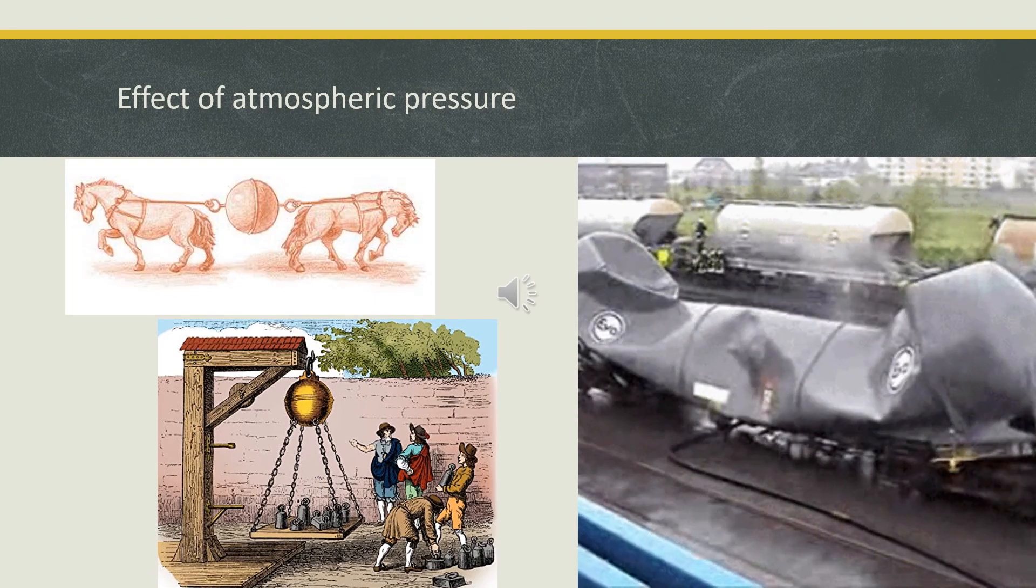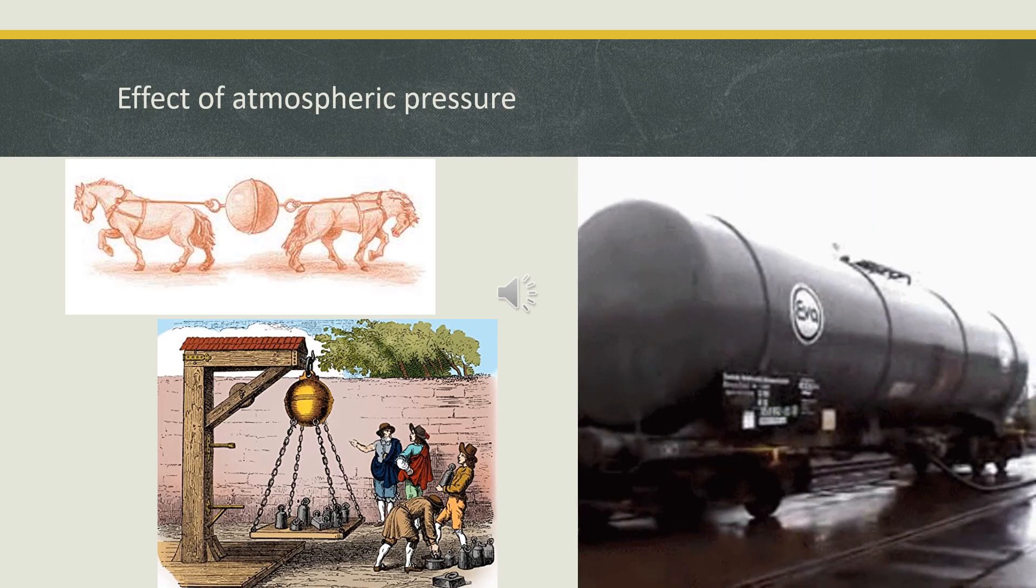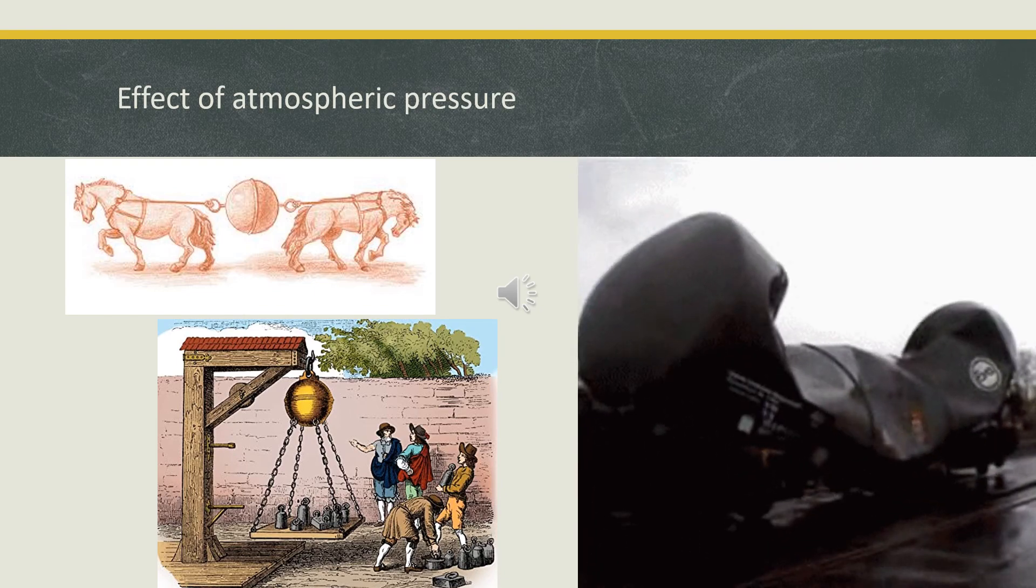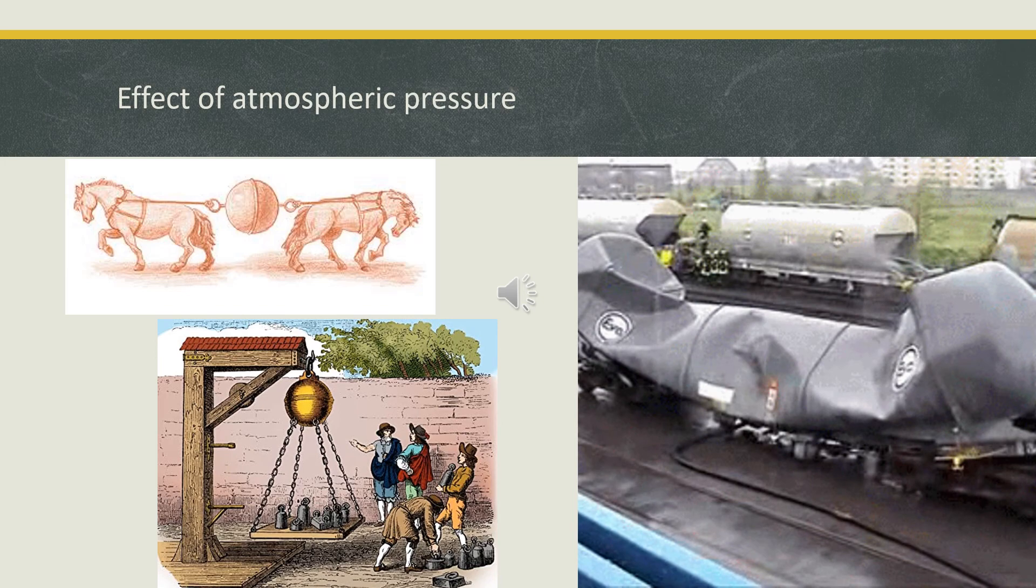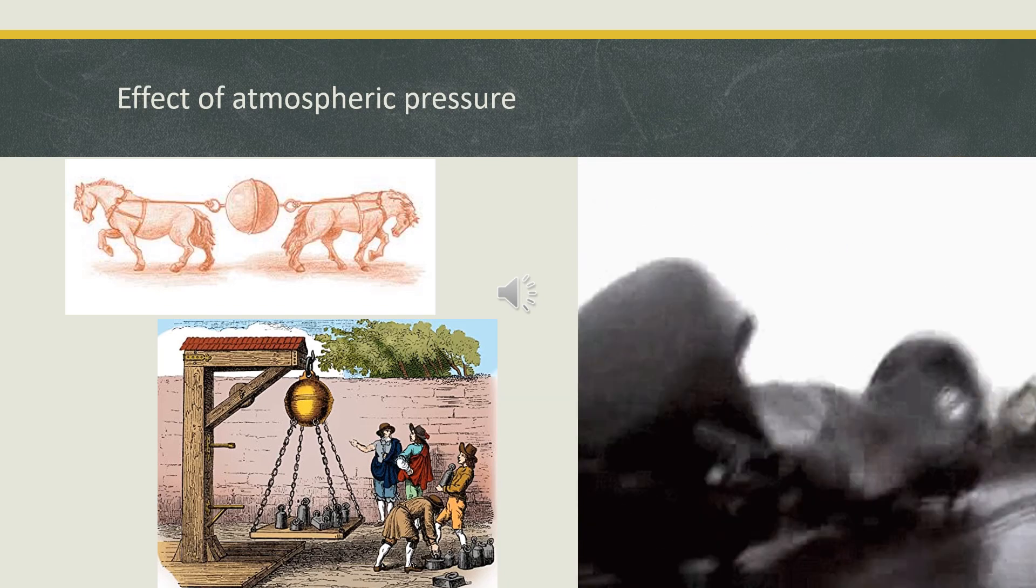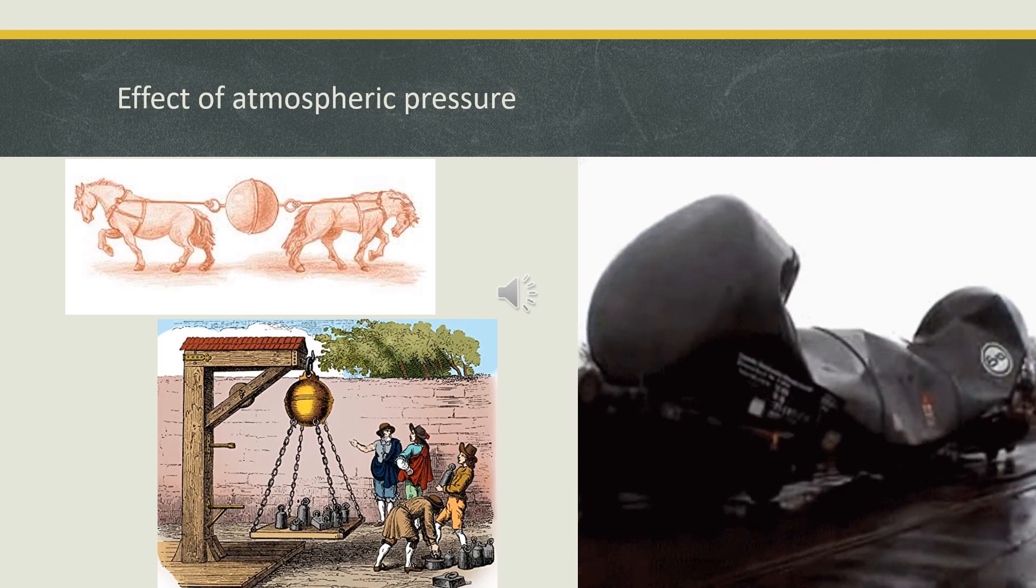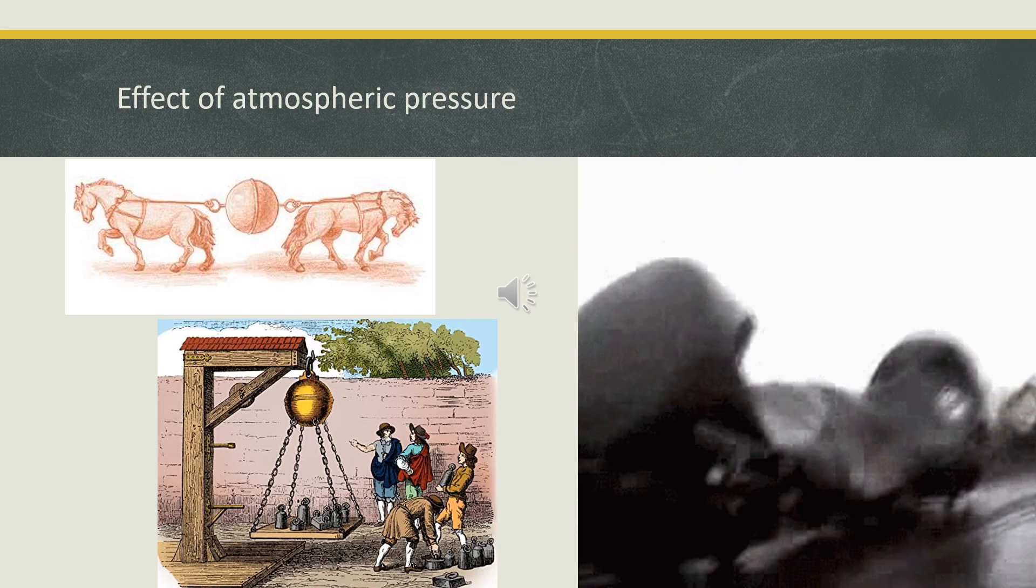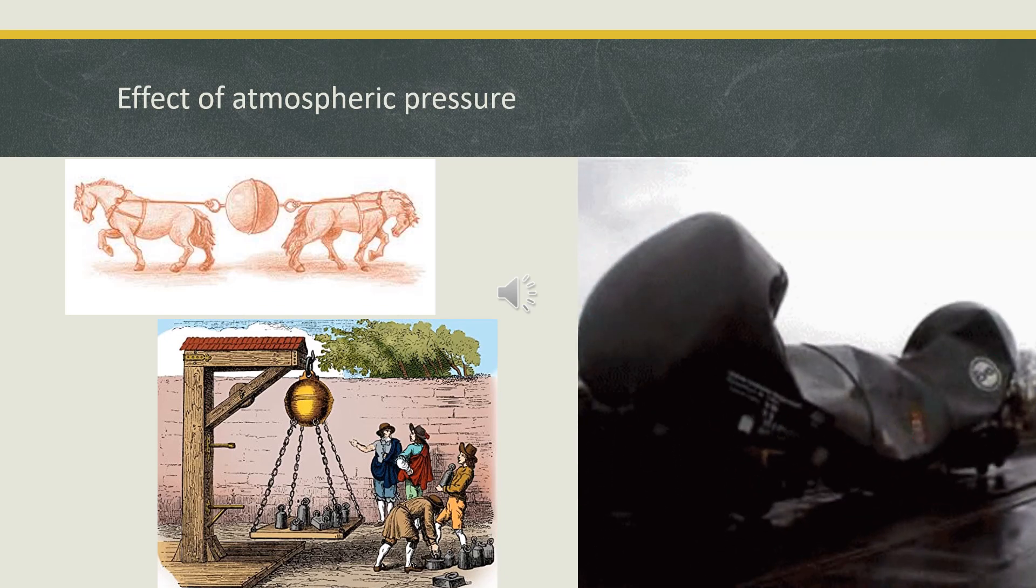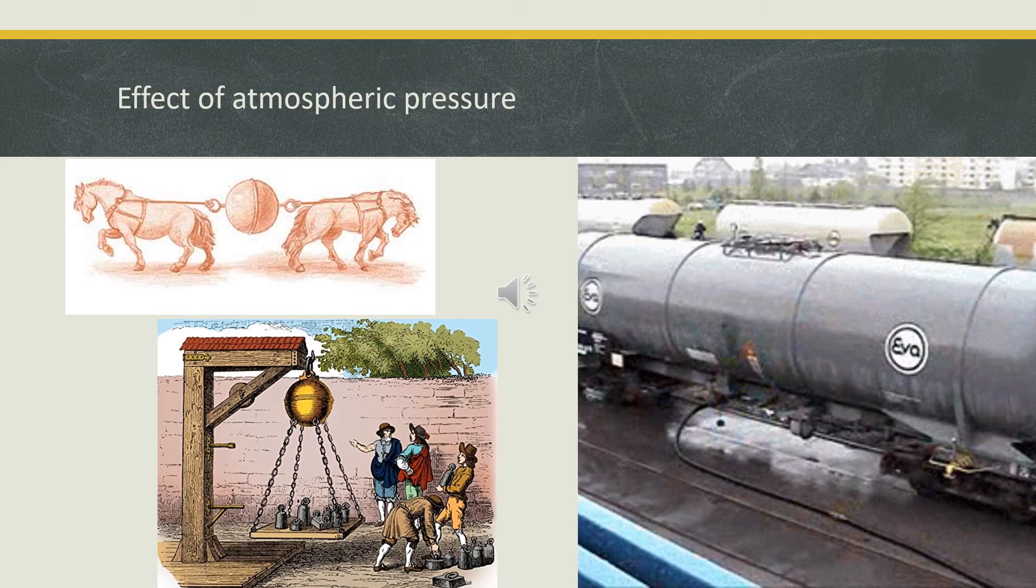The force or the pressure exerted by the atmosphere is very huge. This was demonstrated by a German physicist and engineer by the name Otto von Guericke. He took two semi-circular copper balls and fitted them together to form a sphere. Then he sucked all the air from the sphere using a suction pump to create a vacuum inside the sphere. The two balls were now held together only due to the atmospheric pressure. Then he tried to separate the two balls by getting them pulled apart by a team of eight horses on each side. The balls remained held tightly together due to the atmospheric pressure and did not separate. This proved the enormous force of atmospheric pressure.